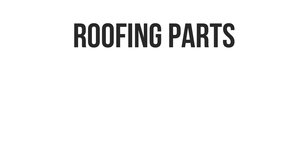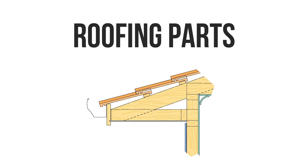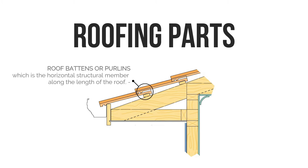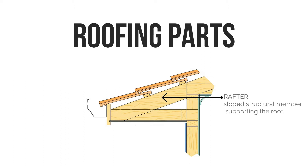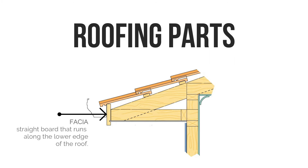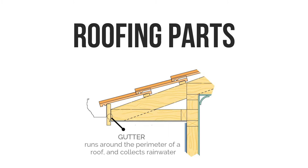But before we dig deeper into estimate, let us first discuss the basic roofing parts. Cutting a roof structure into a section, we could see how it looks as shown on screen. We have the outer skin in the form of either sheet or tile; roof battens or purlins, which is the horizontal structural member along the length of the roof; the rafter, which is a sloped structural member supporting the roof; the eaves, which are the lower border of a roof that overhangs the wall; fascia, a straight board that runs along the lower edge of the roof; and a gutter or channel that runs around the perimeter of a roof and collects rainwater.